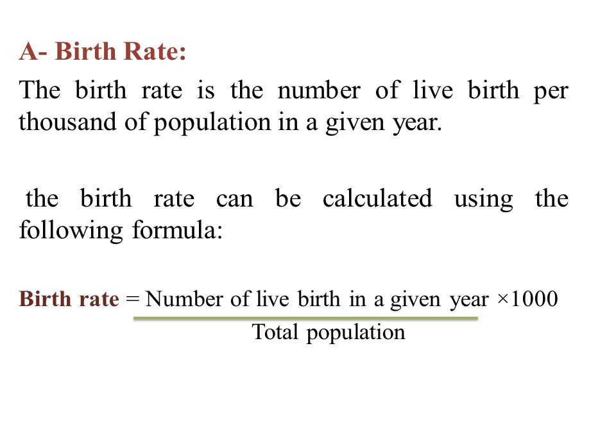Birth rate is the number of live births per thousand of population in a given year. We can calculate birth rate using the following equation: birth rate equals number of live births in a given year divided by total population, times 1,000.